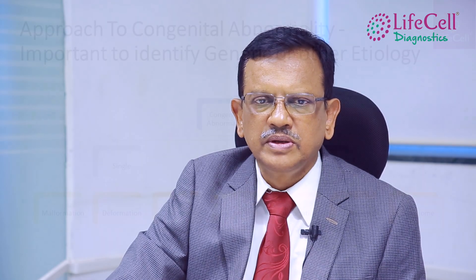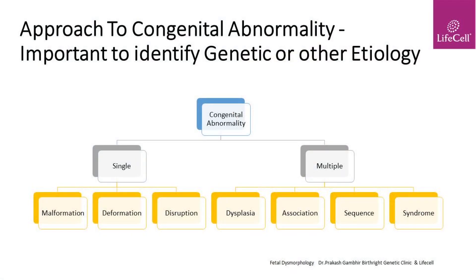Whenever we terminate a fetus for structural malformations we must examine the fetus closely. We tend to use terms like congenital abnormalities, birth defects, congenital anomalies, deformations, and disruptions in a very haphazard manner — that should not be done. Whatever abnormalities are present, we should classify them according to their definitions into their proper categories. This approach will help us in identifying the abnormalities as well as the cause which has led to them. This approach is called fetal dysmorphology.